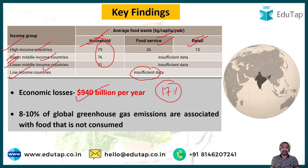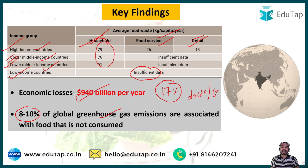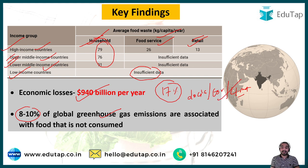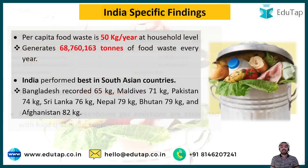Food waste also causes significant economic losses — globally, $940 billion per year is lost due to food waste. It also leads to 8 to 10 percent of global greenhouse gas emissions associated with food that is not consumed. Food waste thus negatively impacts social, economic, and climate dimensions: 690 million people go hungry, there are massive economic losses, and additional greenhouse gas emissions worsen climate change.